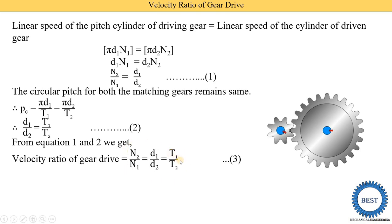In numerical problems, if N1, T1, and T2 are given, we can find N2. If the number of teeth and one speed are given, we can find the second speed.